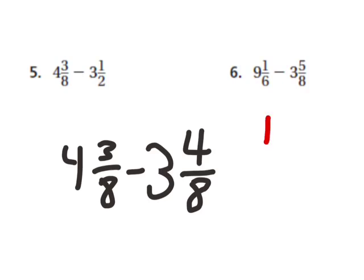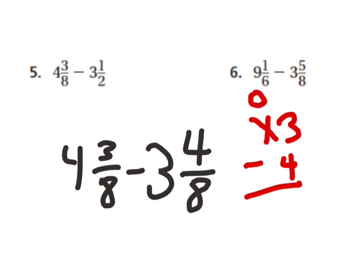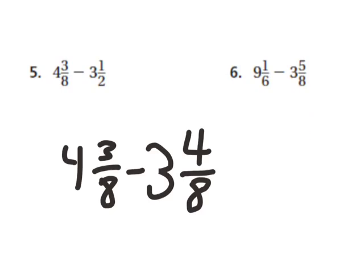It's like if I had 13 minus 4 — I can't take four from the three, so I would have to borrow from the one, subtract one from it, get a zero, and add ten to the three so it becomes thirteen. Then I would be able to subtract it. You have to do something very similar when you are subtracting two mixed numbers where the first fraction is smaller than the second one. You would borrow.